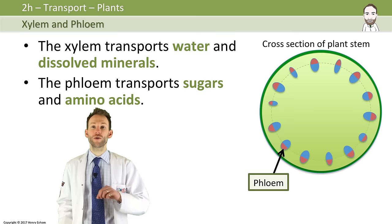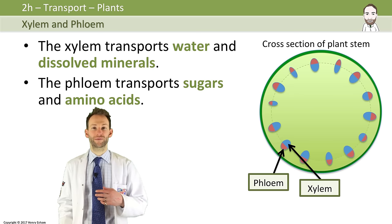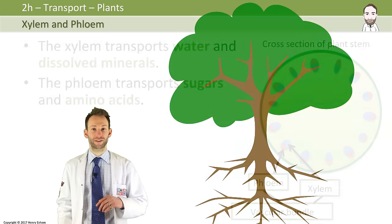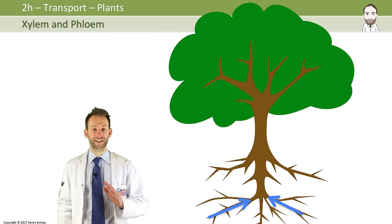You have the phloem around the outer areas of the vascular bundles, and the xylem within that. Now, the xylem transports water and dissolved minerals from the roots up the shoots and to the leaves in one direction, just like this.